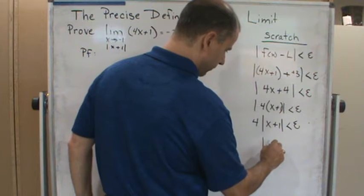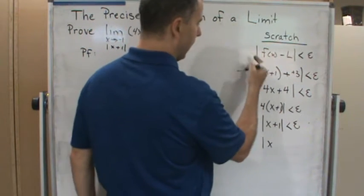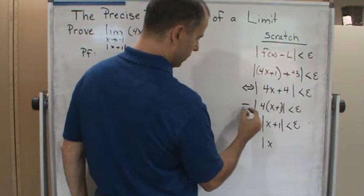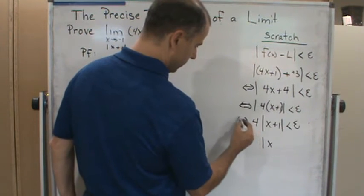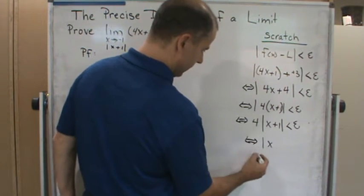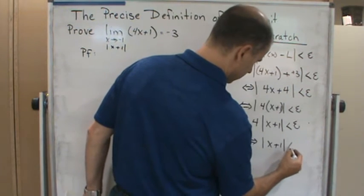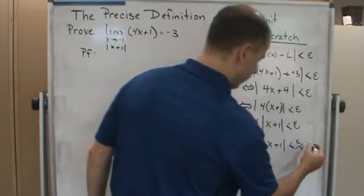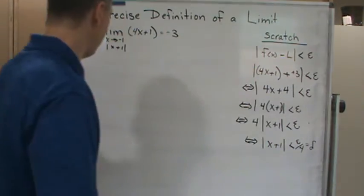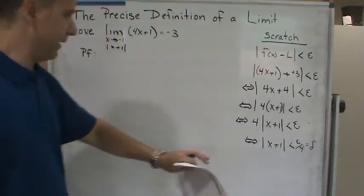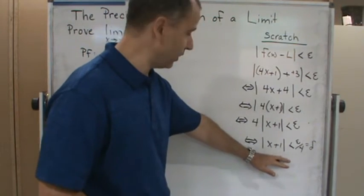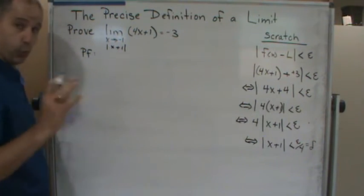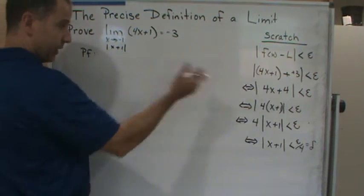And so notice what's going on. This is equivalent to this, which is equivalent to this, which is less than epsilon over 4. Now this is my delta. So now I'm going to go to the proof. Now I'm done. Now watch what I'm going to do. My analysis is going to go up from bottom up. So now here's my proof. Notice how short the proof is once I know what I'm doing.